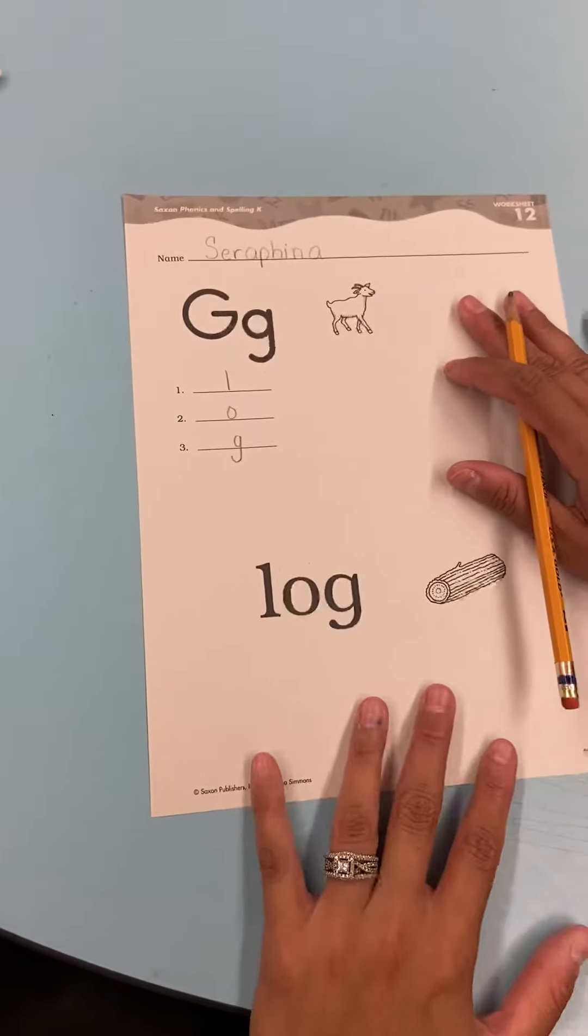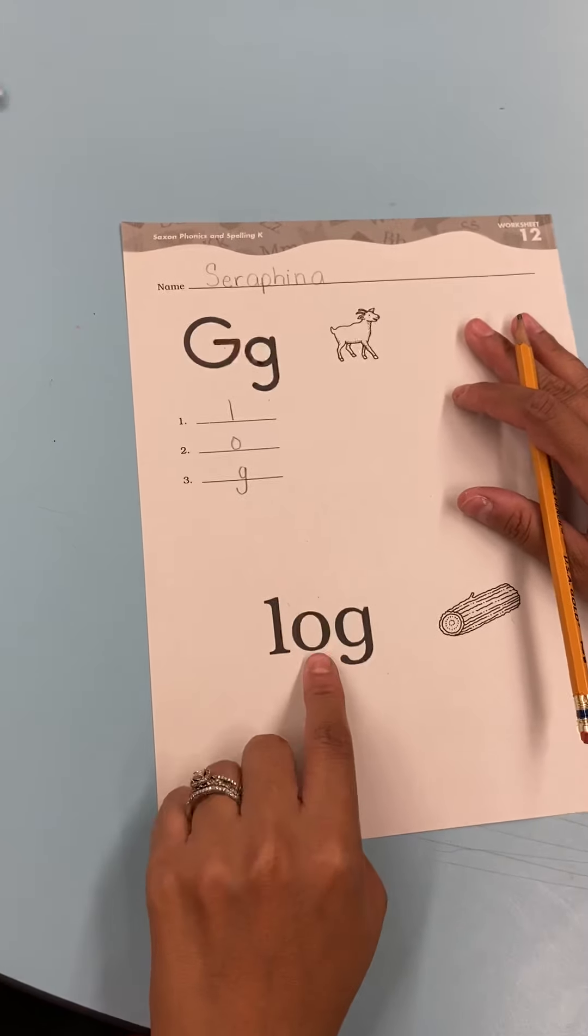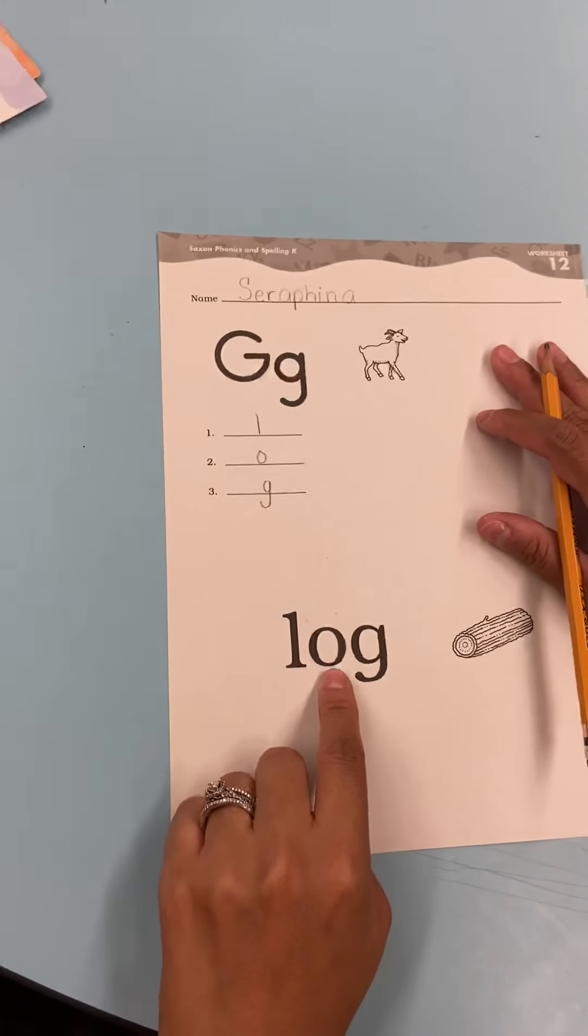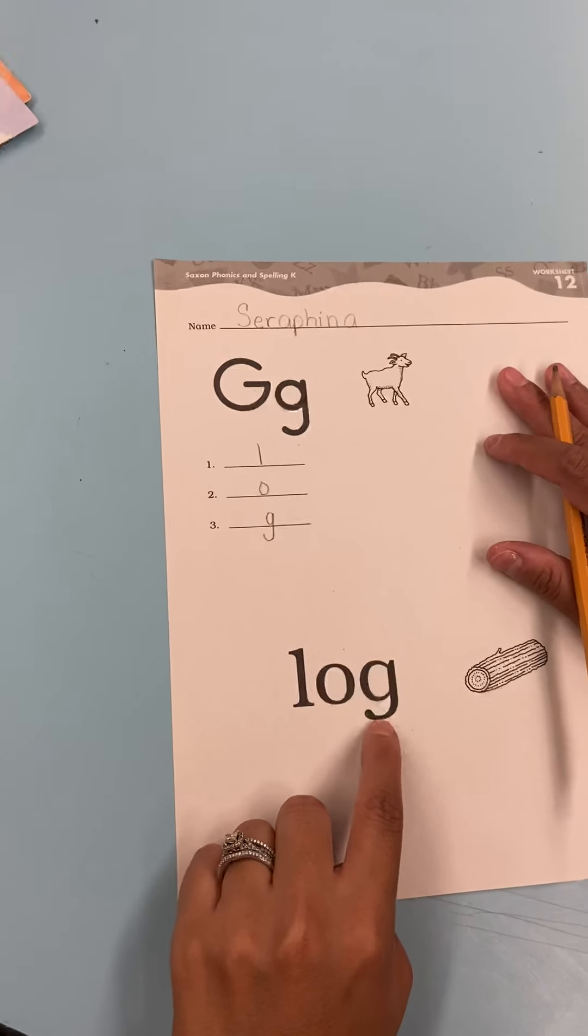All right. And at the bottom, we have a vowel. Please point to the vowel. Yes. O is a vowel. G is a consonant. We're going to learn a rule that helps us learn to read.